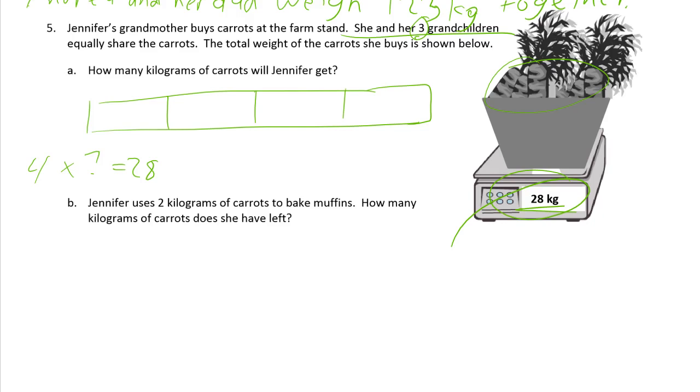We could do this just by dealing the cards. You might look at this and think four times something equals 28 and figure it out that way. Think of it as a missing factor. We're dividing by four. So 28, we could just do this. 1, 2, 3, 4, 5, 6, 7, 8, 9, 10, 11, 12, 13, 14, 15, 16, 17, 18, 19, 20, 21, 22, 23, 24, 25, 26, 27, 28. There's all 28 kilograms. That's a lot of carrots. So Jennifer gets the same as everybody else. Maybe that's hers. She gets, and what are we counting? We're counting kilograms of carrots. So she gets seven kilograms of carrots.